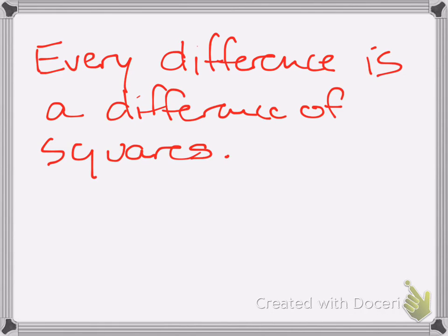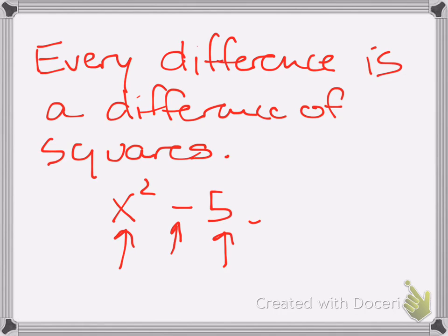What we just looked at with x squared plus 36 is that we can write that as x squared minus negative 36, and use the two square roots of negative 36 to write it as a factored pair of conjugates. Every difference is a difference of squares. For example, x squared minus 5 is a difference of squares. Can't we take the square root of 5? We don't know exactly what it is, but 5 has a square root. So I've got a difference, I've got a square, and I can take the square root of 5. So I could always write this as x plus the square root of 5 times x minus the square root of 5.